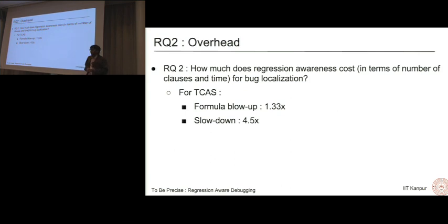Research question 2 is the overhead, how much does this cost us? For TCAS, the formula blowup is around 1.3 times and the slowdown is around 4.5.